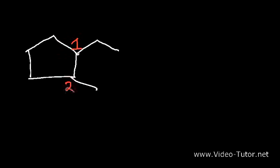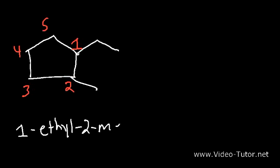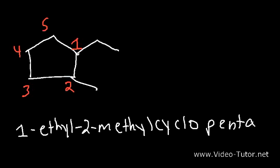How can we name this particular compound? We have a methyl group — since it only has one carbon — and here we have an ethyl group. When you have multiple groups, you want to put them in alphabetical order. E comes before M, so we put ethyl first before methyl. We number in increasing order: ethyl gets carbon one and methyl gets carbon two. There are five carbons in the ring, so it's a cyclopentane ring. This is going to be called 1-ethyl-2-methylcyclopentane.